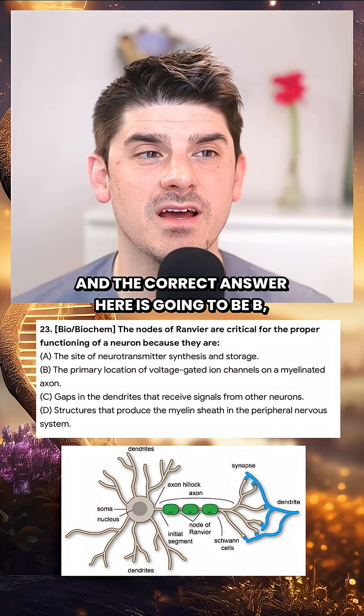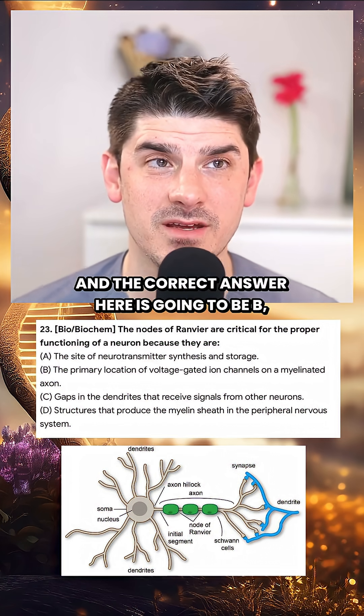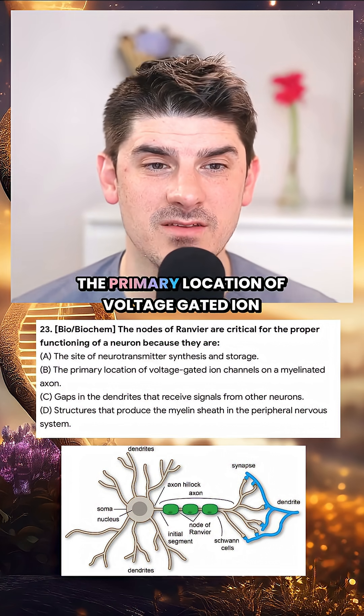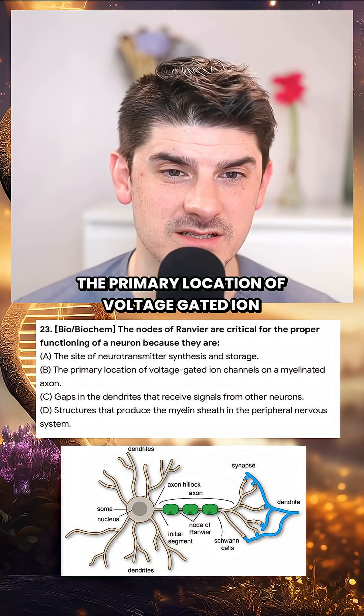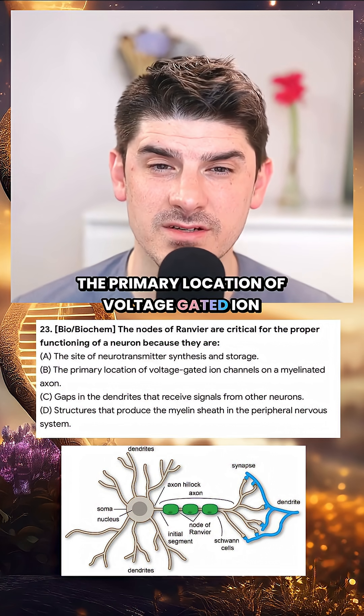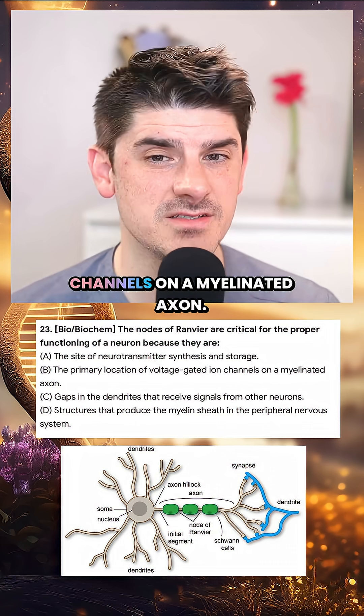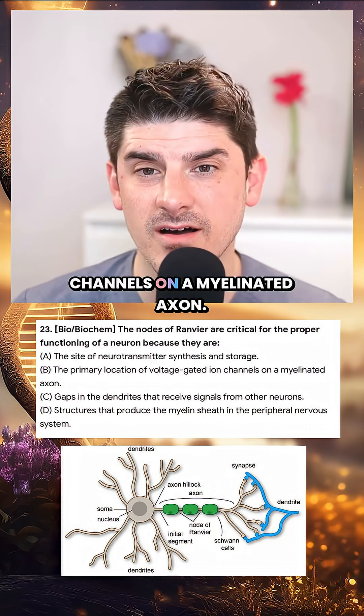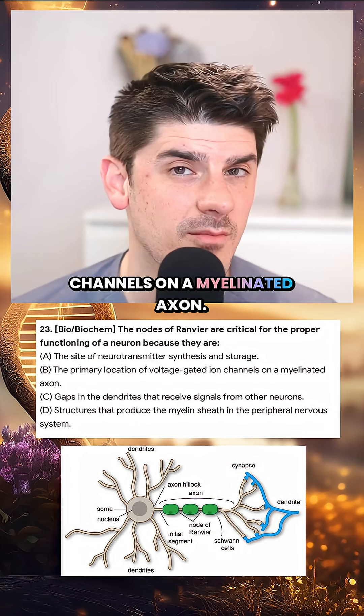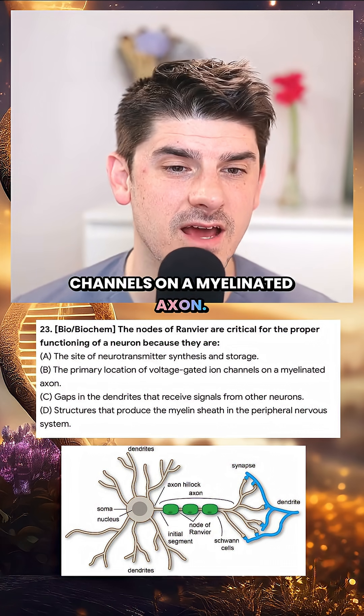The correct answer here is going to be B — the primary location of voltage-gated ion channels on a myelinated axon.